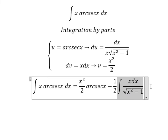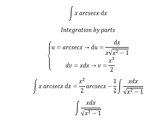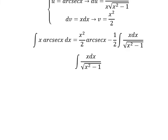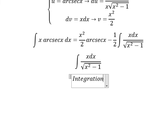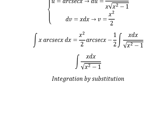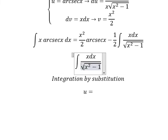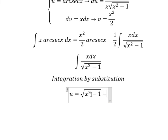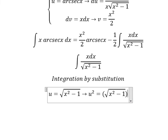Now I will concentrate on this remaining integral only. I will solve it by substitution. I will put u equals the square root of x squared minus 1, then square both sides to cancel the square root.